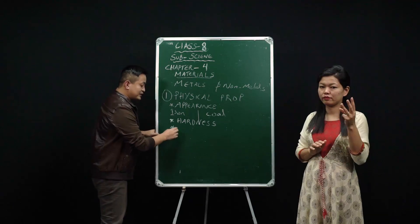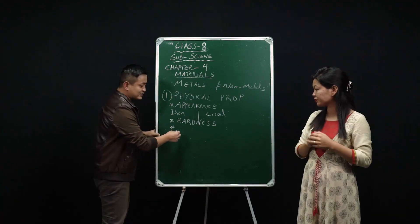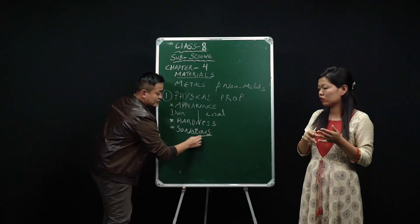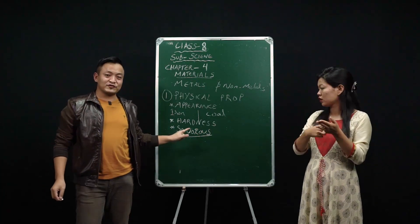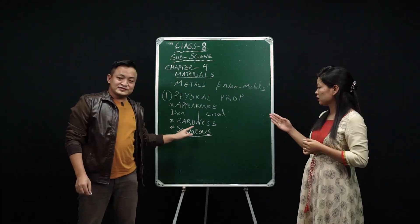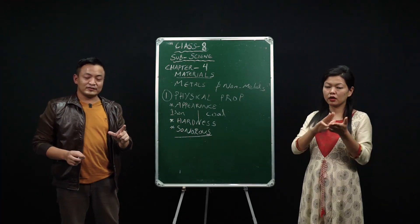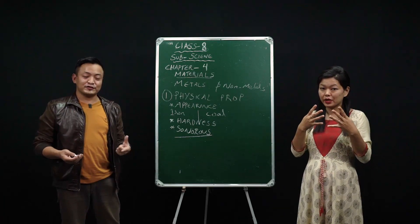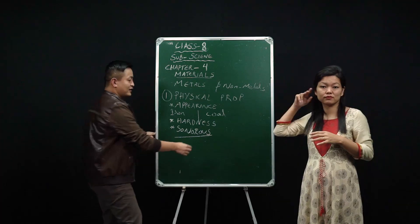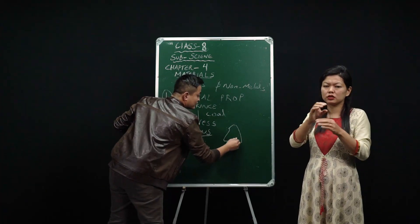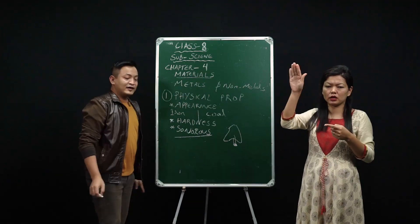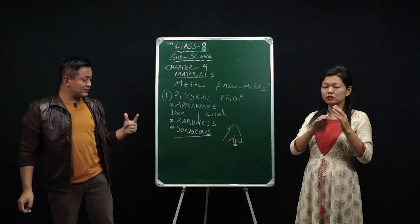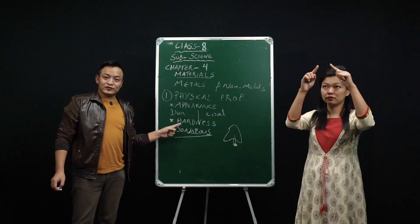The third property is sound — or we can say metals are sonorous. What is sonorous? Metals have a ringing sound. Have you observed a church bell or a school bell? It is made of metal, and there's another metal inside. If you strike these two metals together, you get a ringing sound. That is an example of sonorous.